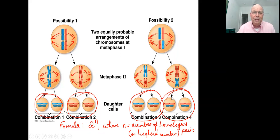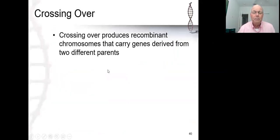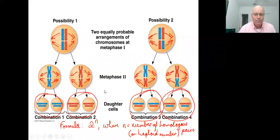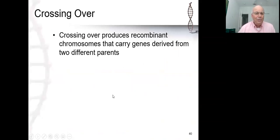Consider the human number. What is n going to be for a human, and what is the implication of that? We'll get to that shortly. But first, the other source of genetic variation — and one that is harder to predict — is the concept of crossing over.